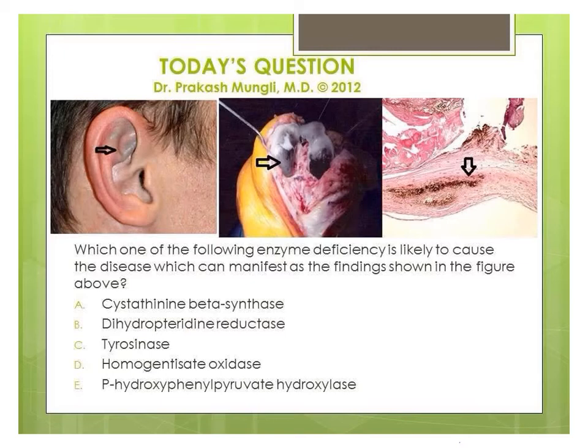The options given are option A to option E: cystathionine beta synthase, dihydropteridine reductase, tyrosinase enzyme, homogentisate oxidase, and p-hydroxyphenylpyruvate hydroxylase enzyme.